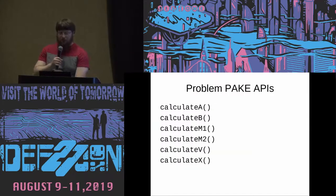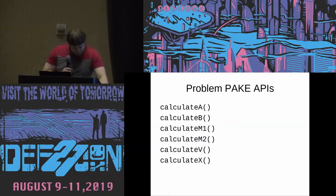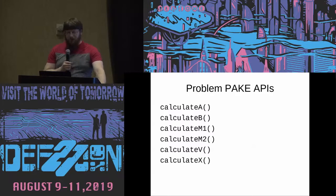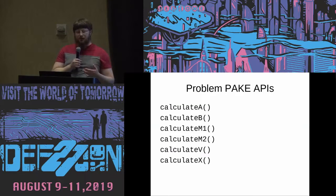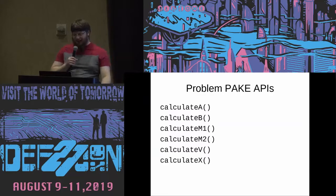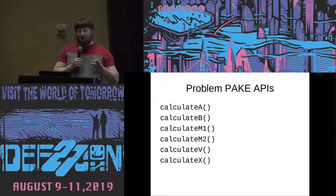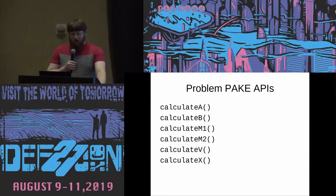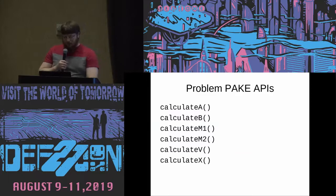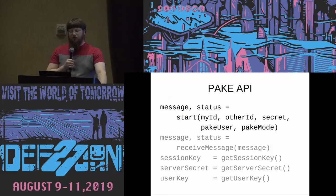So the problem with PAKE APIs — this is what you usually see in an implementation of SRP: calculate B, calculate M2, what's V, and so on. The developer has to figure out what all these are. Some implementations leave it up to the developer to figure out whether and how to check M1 and M2, which one to send first, and as I said before with SRP, this can lead to very bad bugs.